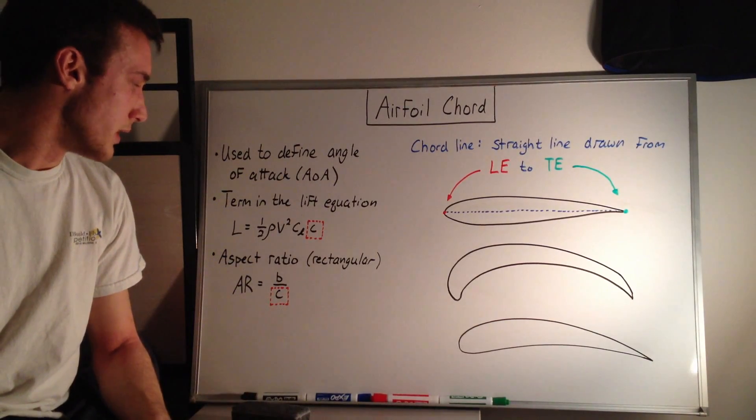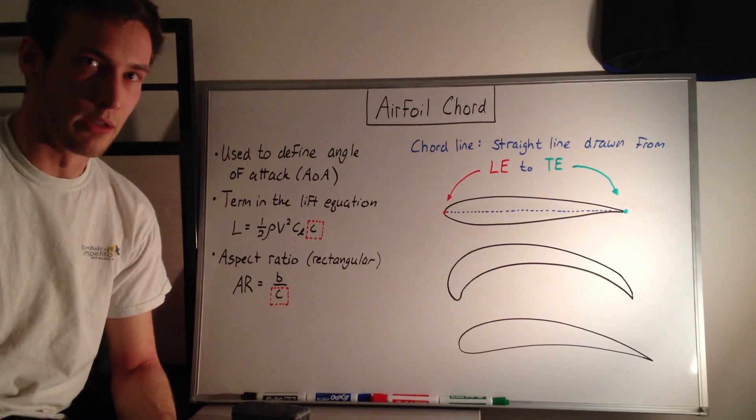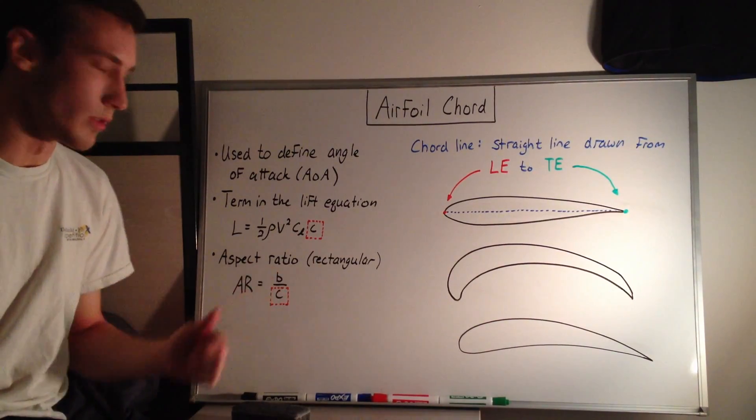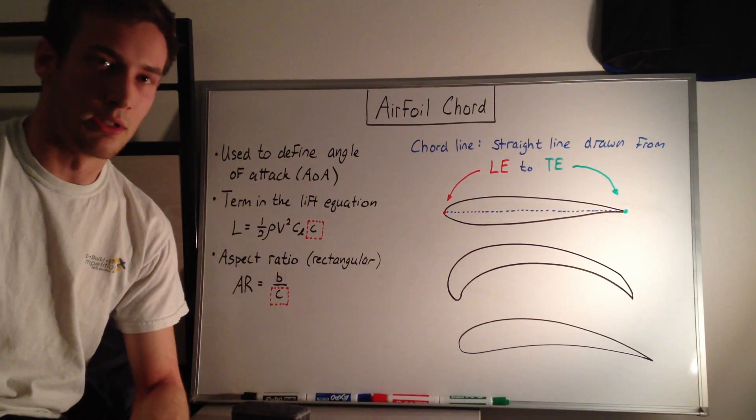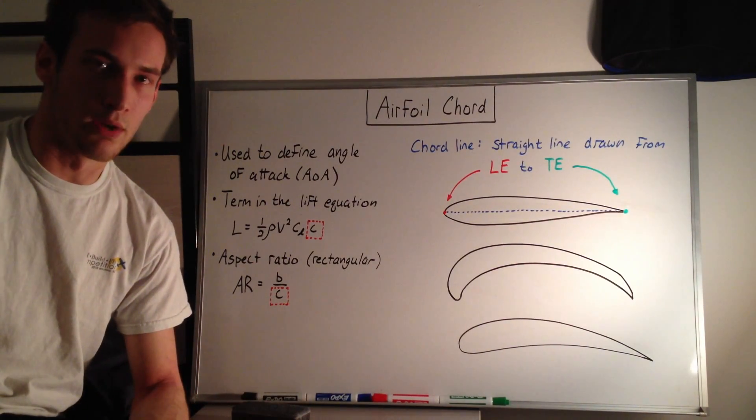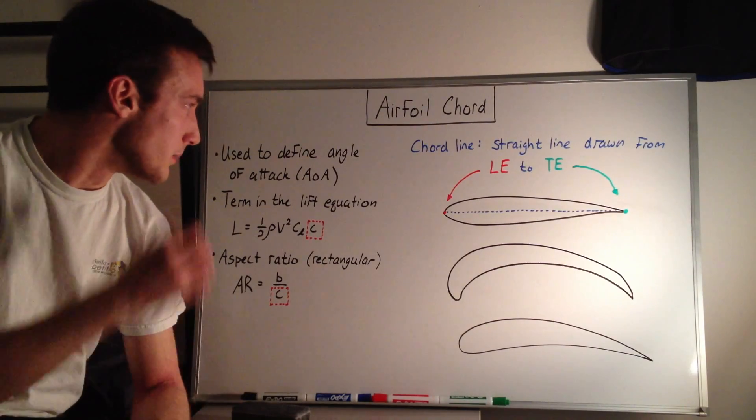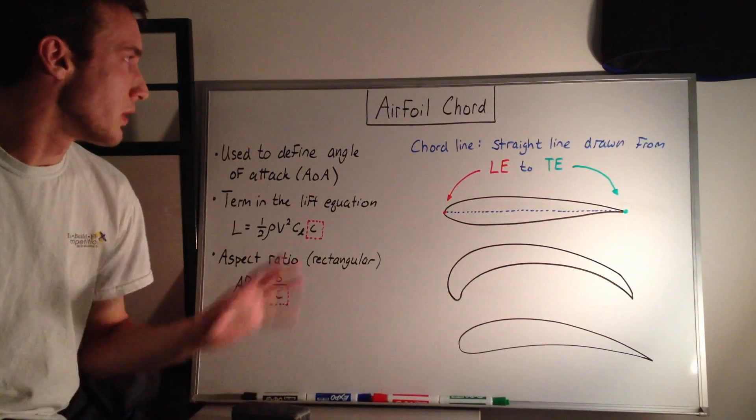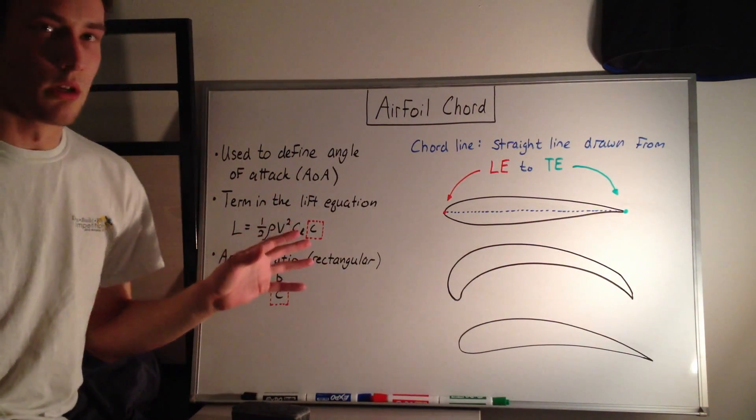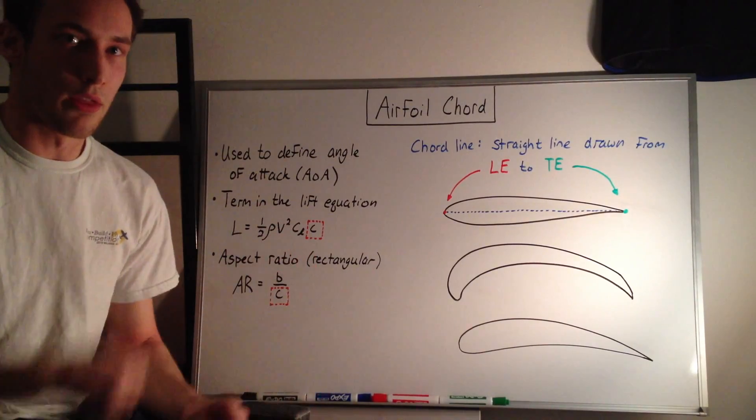And then also in the aspect ratio, if it's a rectangular wing, it reduces to B over C. The aspect ratio that you've probably seen is B squared over S for any shape wing, which is the wingspan squared over the wing area. So those are just a few of the places that you'll see the cord line or the cord length used.